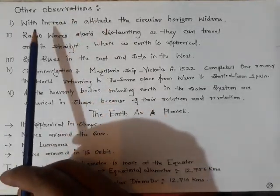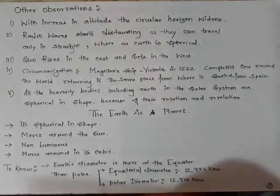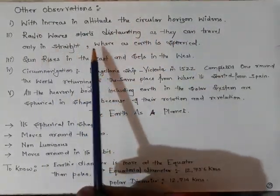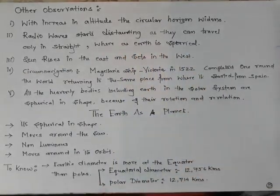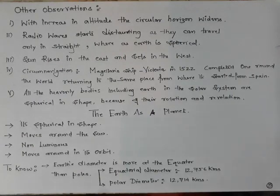Other observations: with increase in altitude the circular horizon widens. Radio waves start distorting as they can travel only in a straight line, whereas the earth is spherical. This happens when you are traveling in a train or a bus and your mobile network cuts out. If the earth was flat, radio waves would have been uniform everywhere, but because the earth is a sphere the radio waves cannot travel along its curvature.